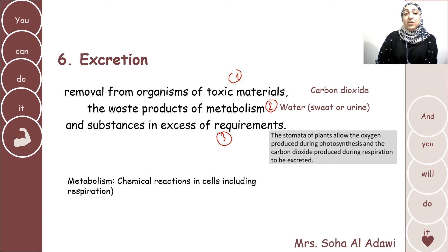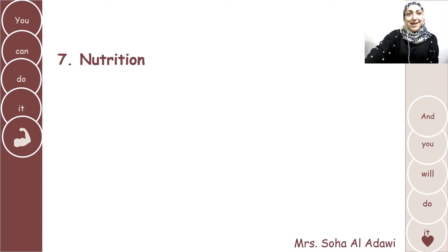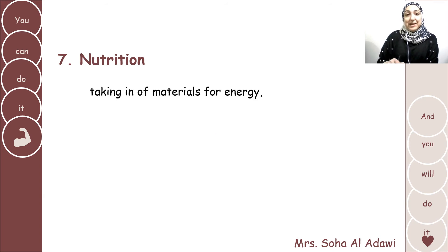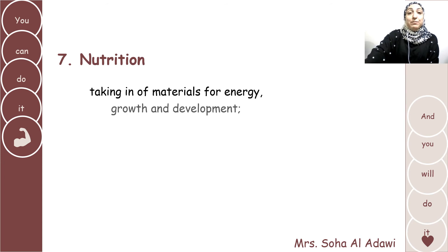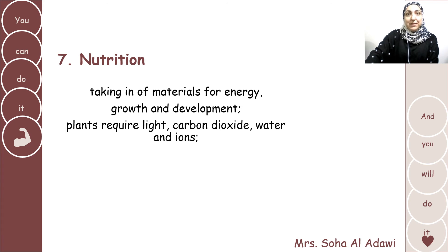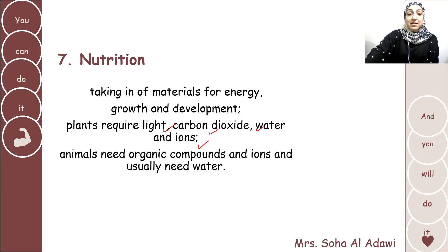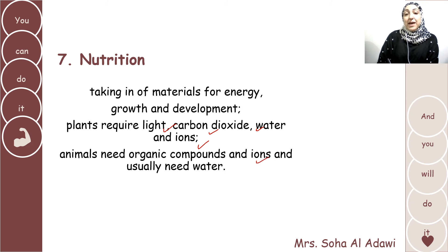The last characteristic is nutrition — the taking in of materials for energy, growth, and development. Plants require light, carbon dioxide, water, and ions. Animals need organic compounds, because they cannot produce these themselves, as well as ions and water. So nutrition means taking in materials to make energy and for growth and development.